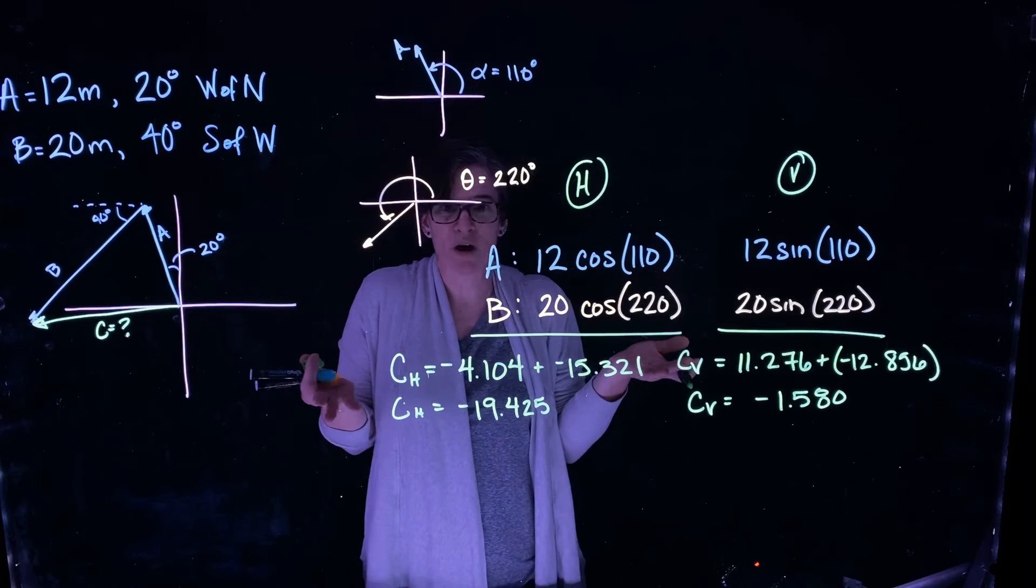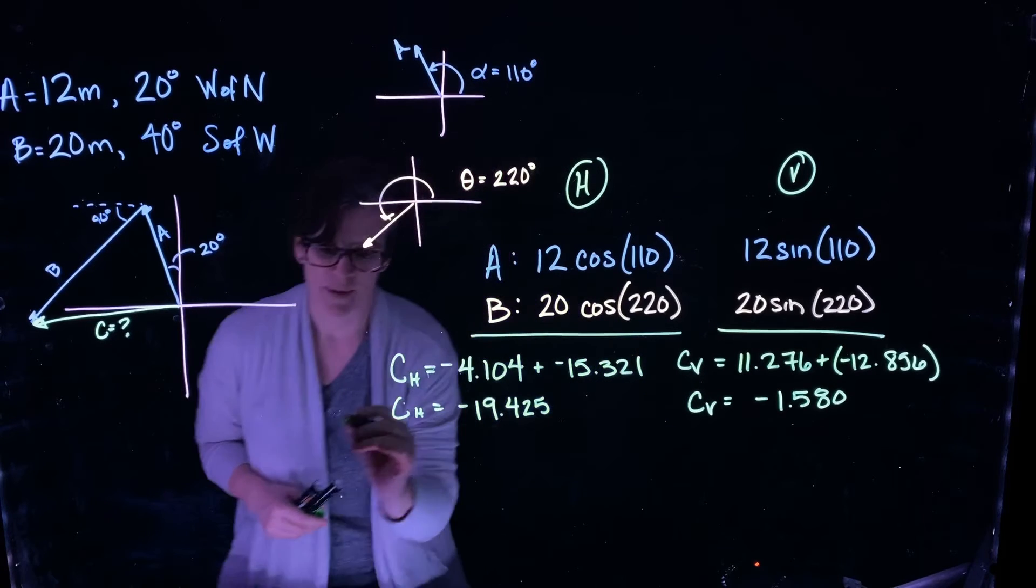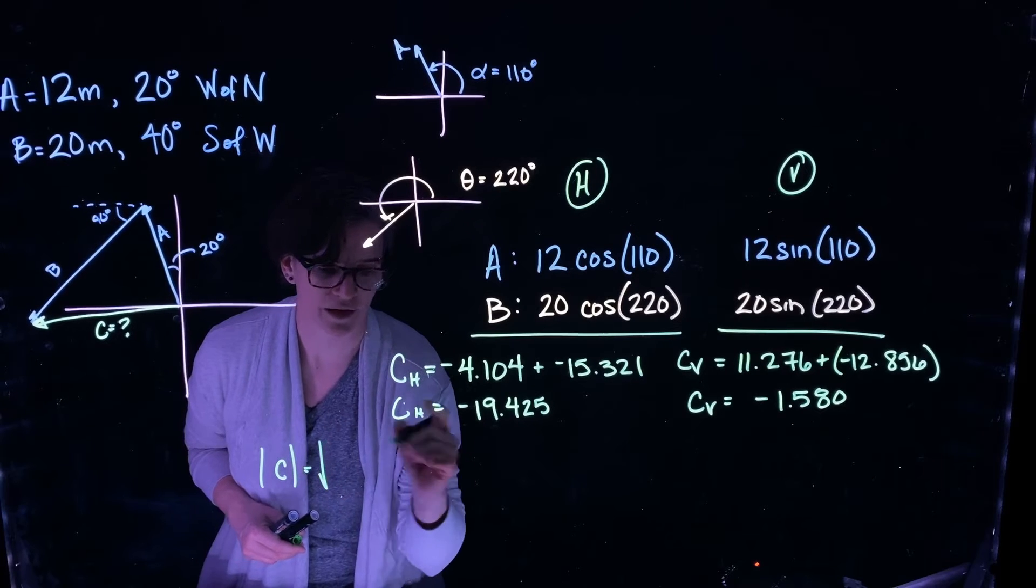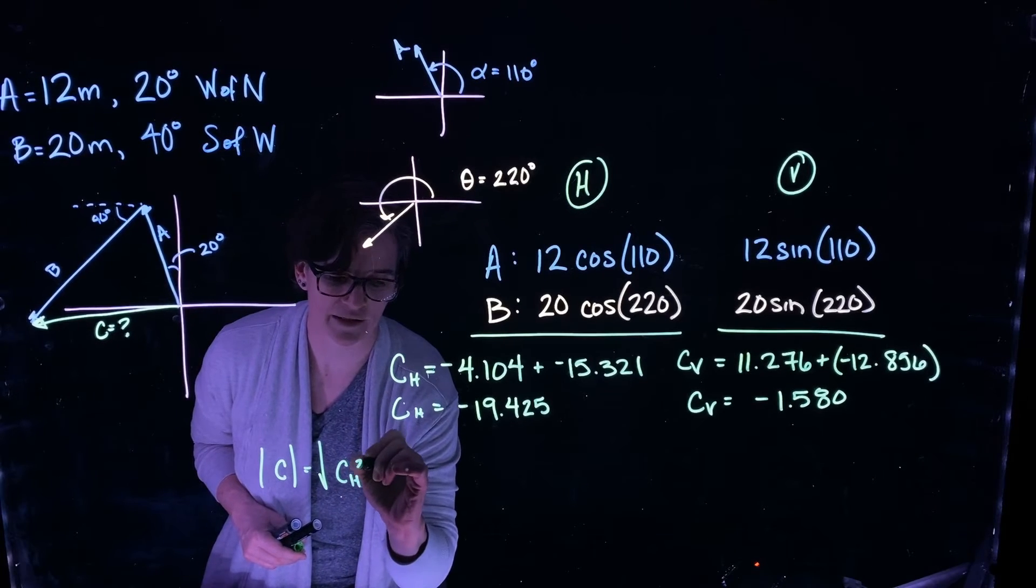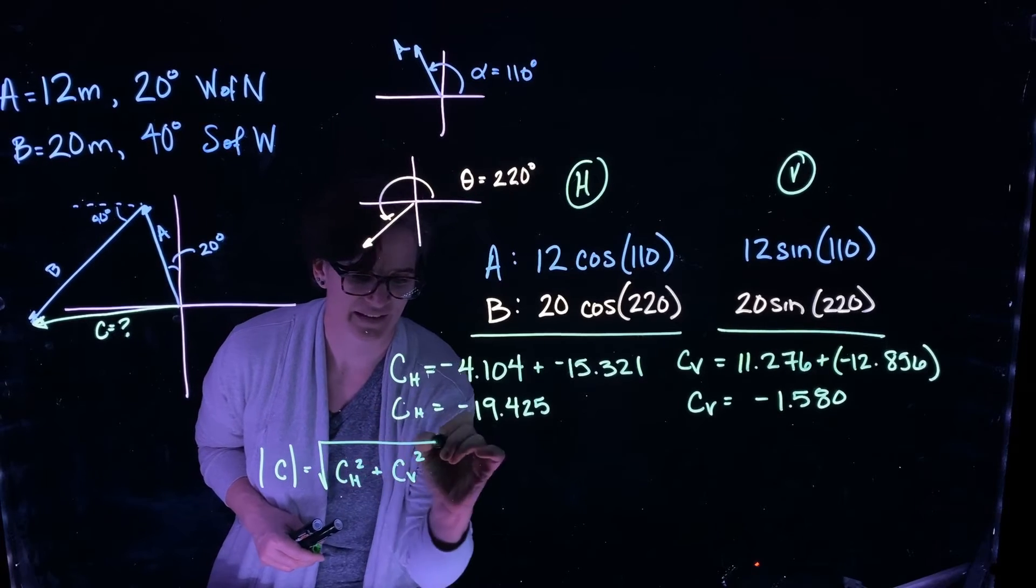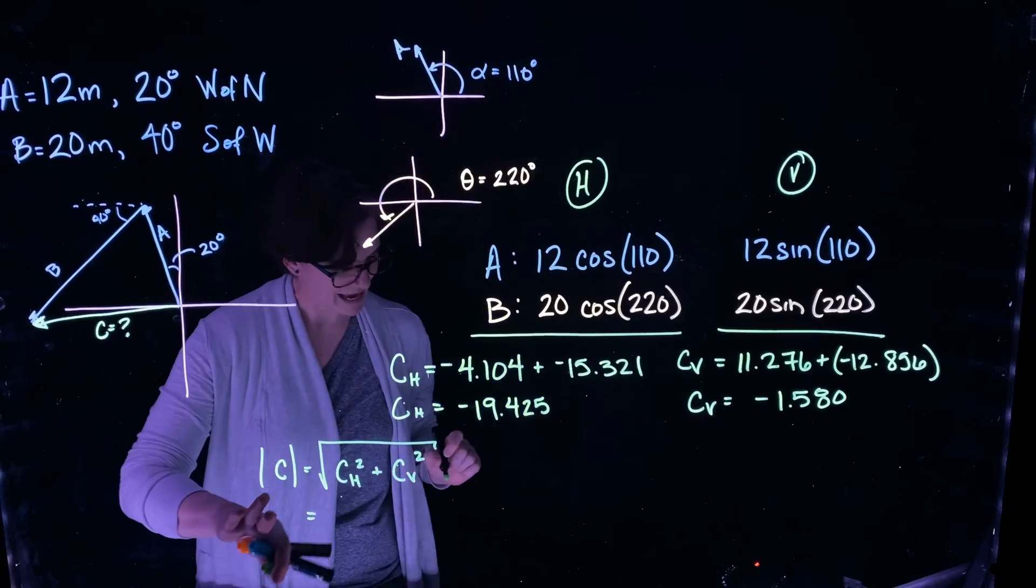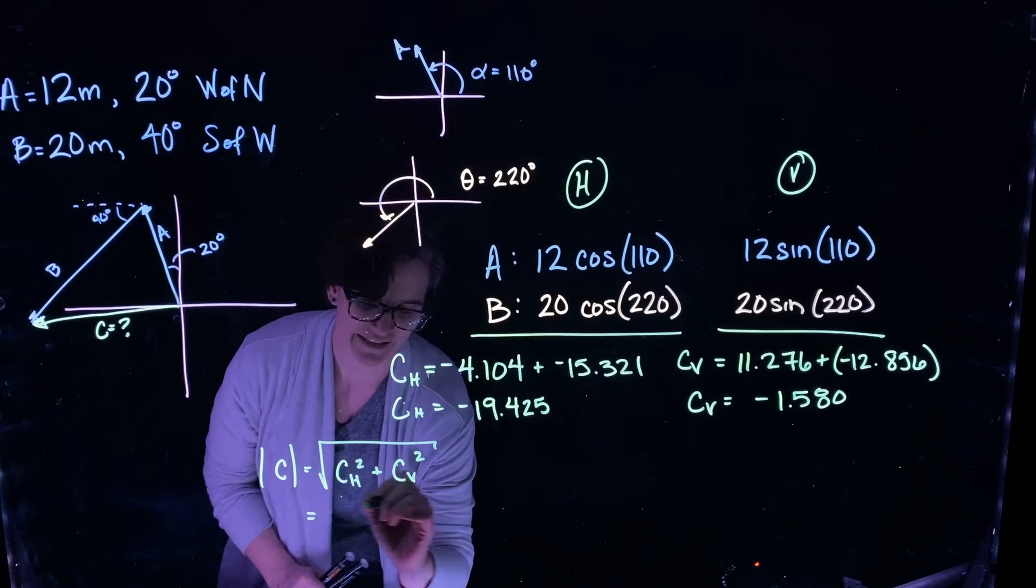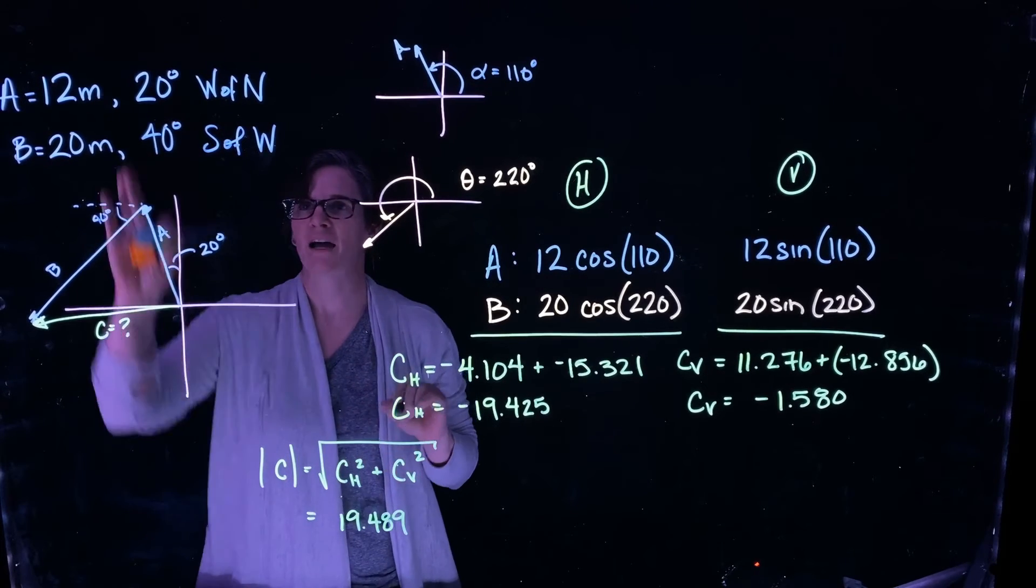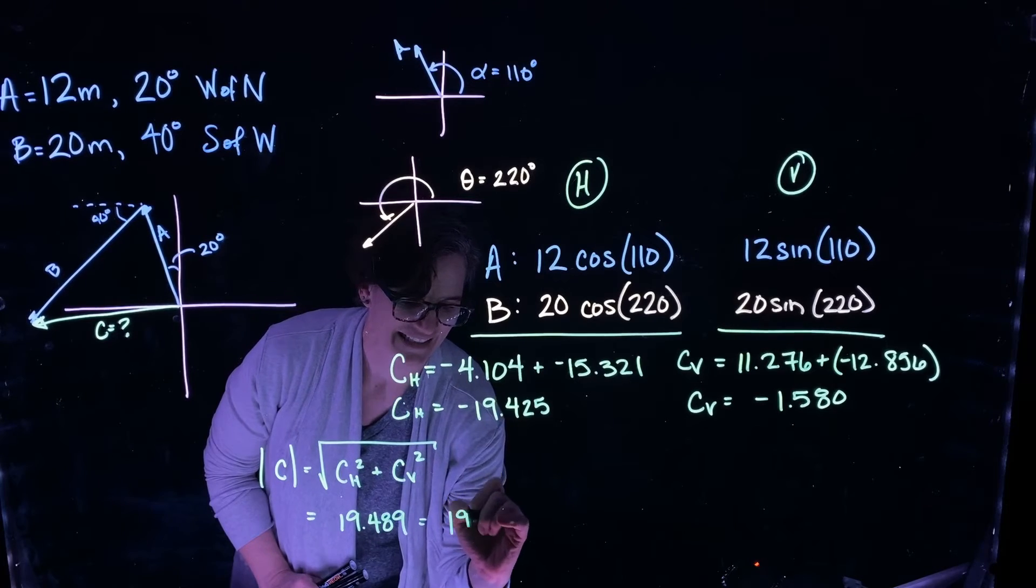So at least we're consistent with our graphical representation. Alright, what do I now do with these two components if I want vector C? We'll use our trigonometry. Remember, the magnitude of vector C is the square root of the horizontal component squared plus the vertical component squared. And if I look at the square root of these two component squares, I get a magnitude of 19.489. Now I only have two significant figures, so we're going to round that to 19.